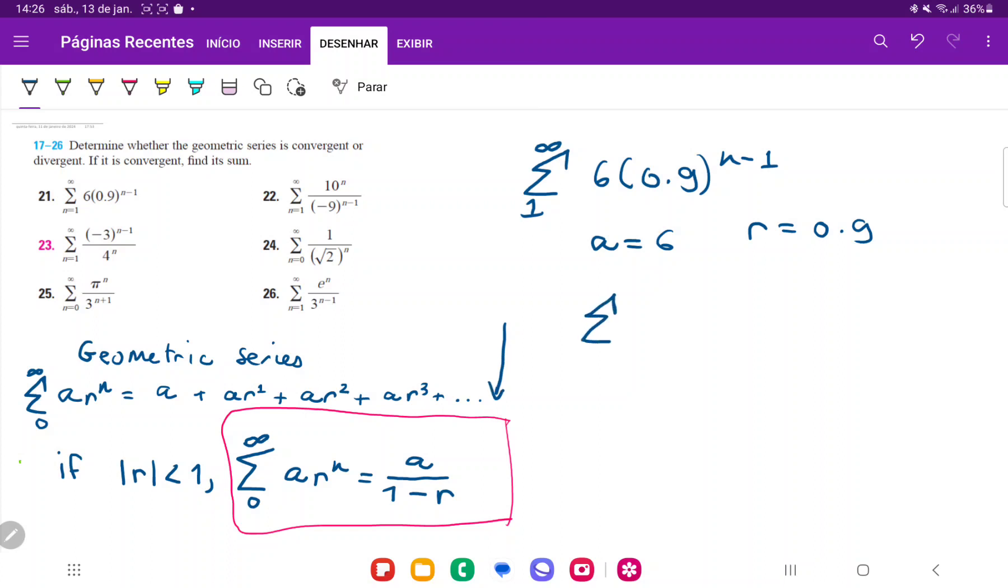So therefore, the sum is going to be equal to a, so 6 over 1 minus r, so 1 minus 0.9, which is the same thing as 6 over 0.1, which is the same thing as 60.